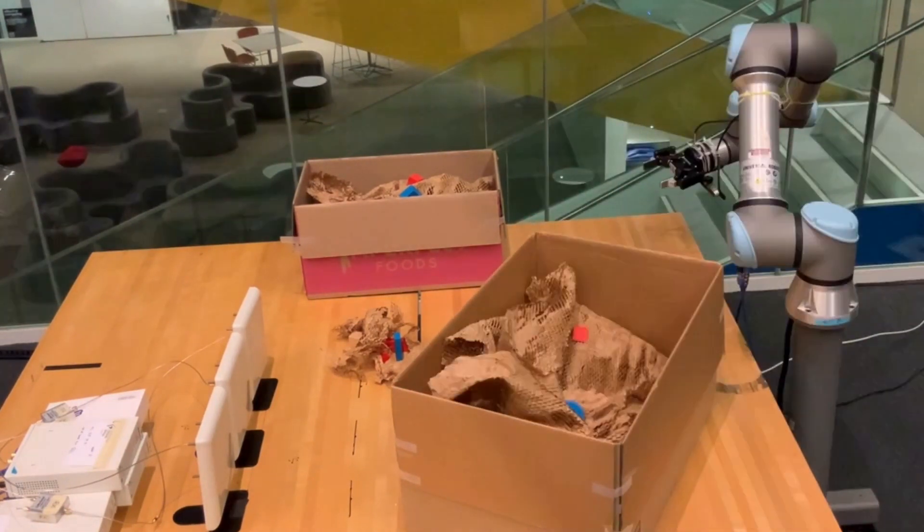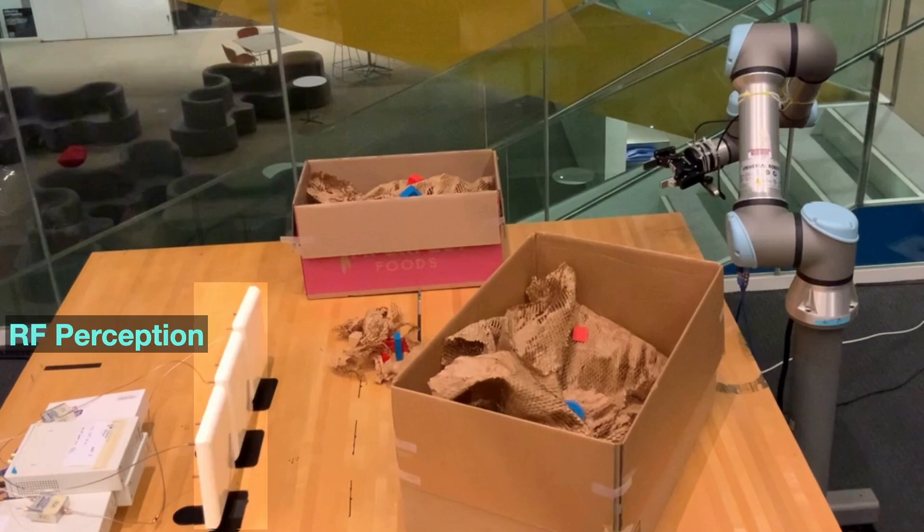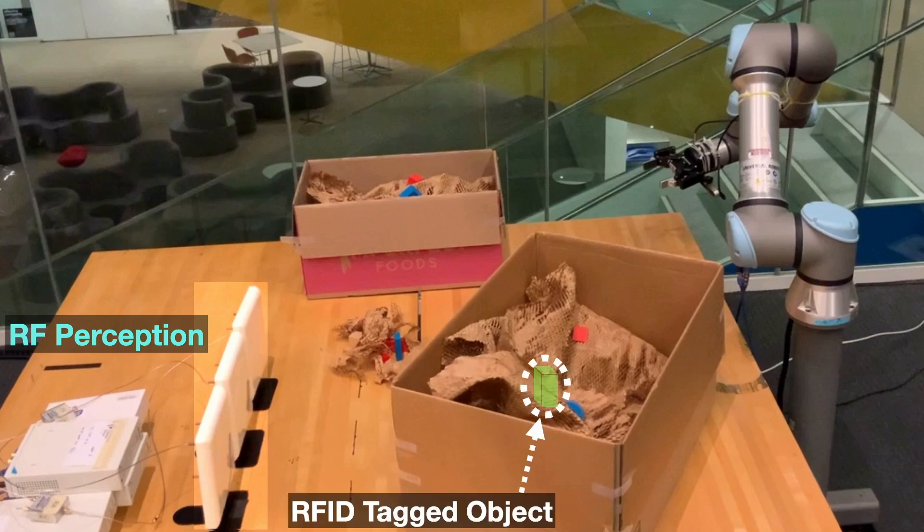Our system relies on RF perception using the antennas you see here. The target object is tagged with a very cheap RFID sticker. RFID tags such as this one are on billions of objects.